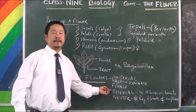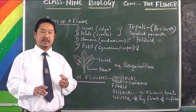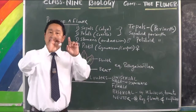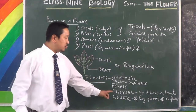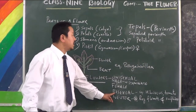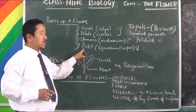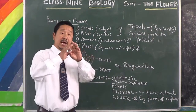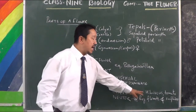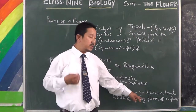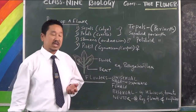Bisexual flower: when a flower contains both sexes together in the same flower — that is, when both stamens and pistils are present together — then the flower is said to be a bisexual flower. For example, hibiscus and tomato are examples of bisexual flowers.